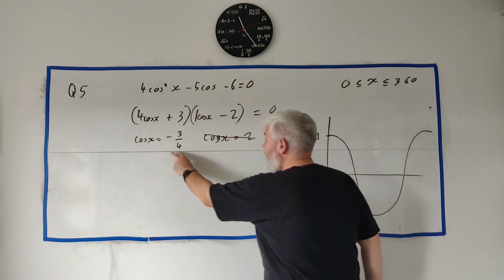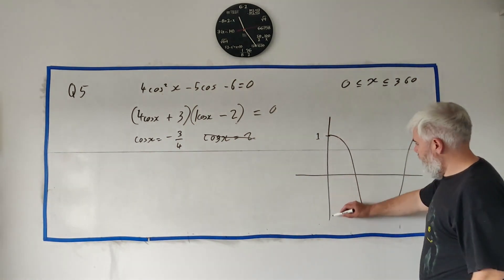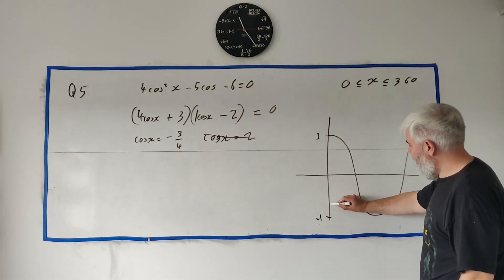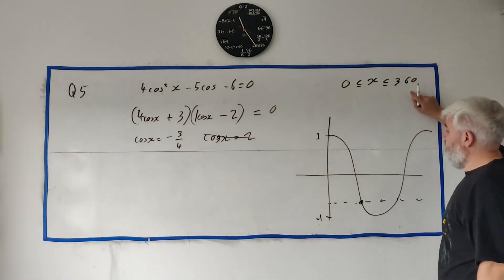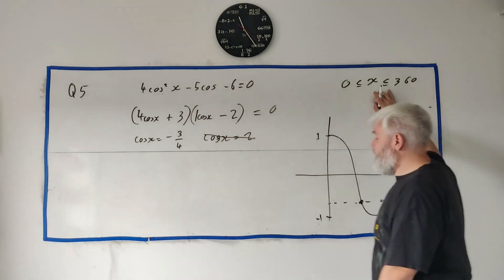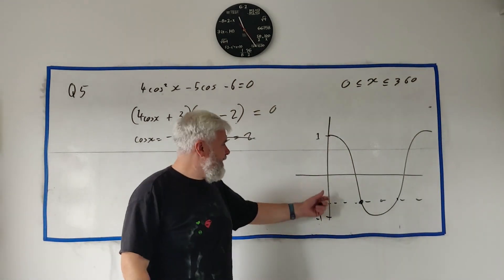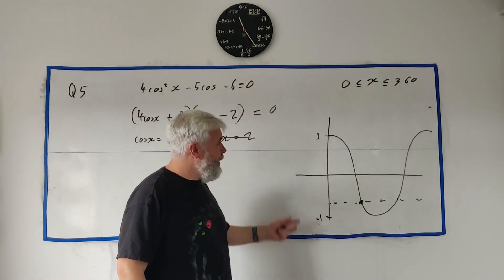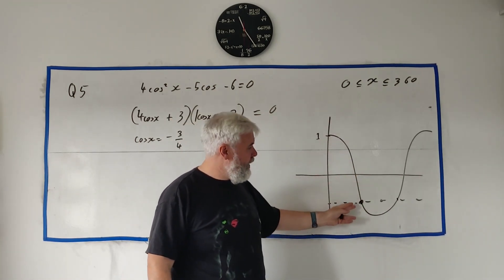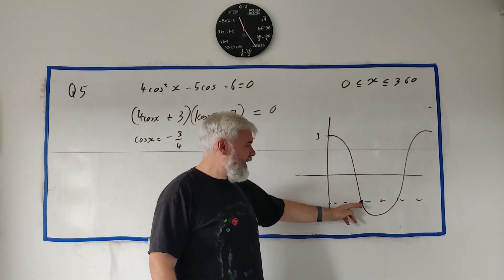Okay, so the one we're left with, cosine x is equal minus three over four. That is here. Here's minus one. Three over four, somewhere here. We get two answers in this world. Remember they could have different numbers here. Often the answer is over here. Often the answer is over there somewhere. But now in this world, from our drawing, we get two answers.